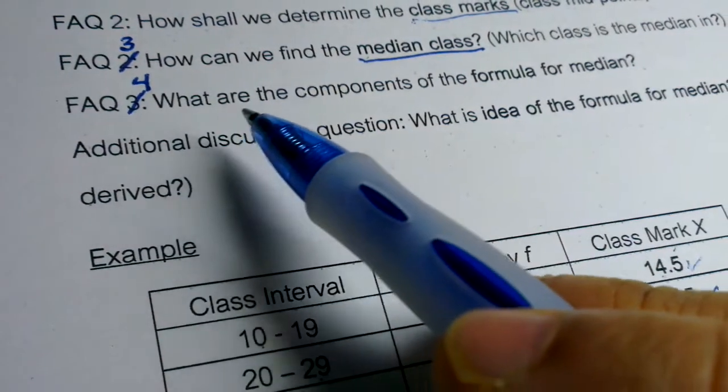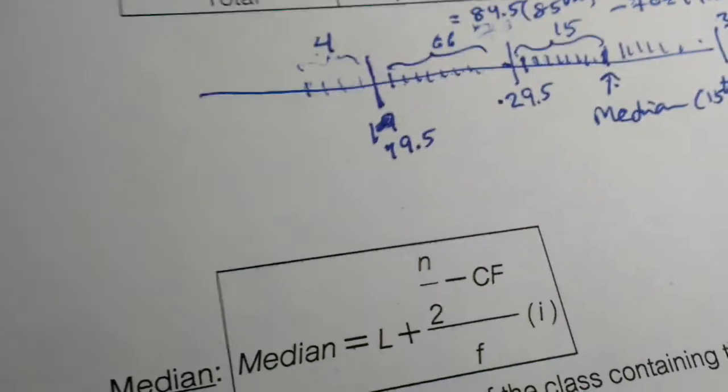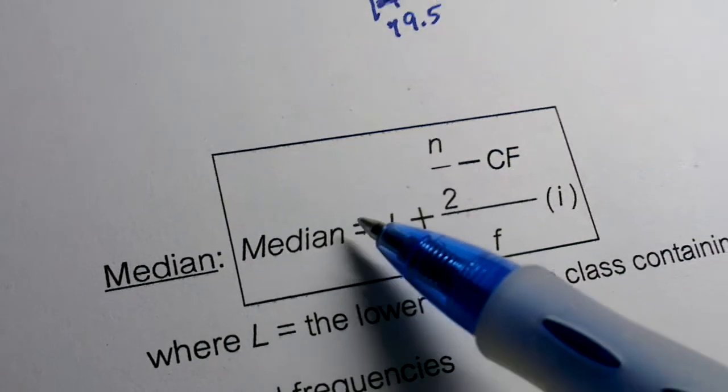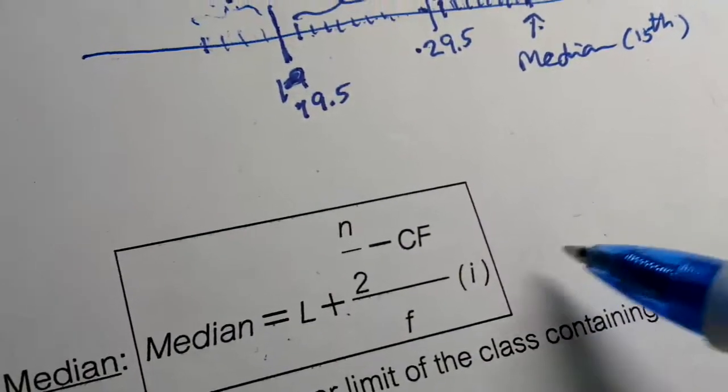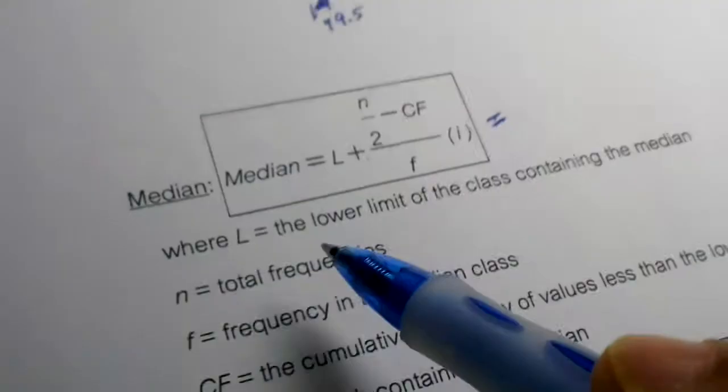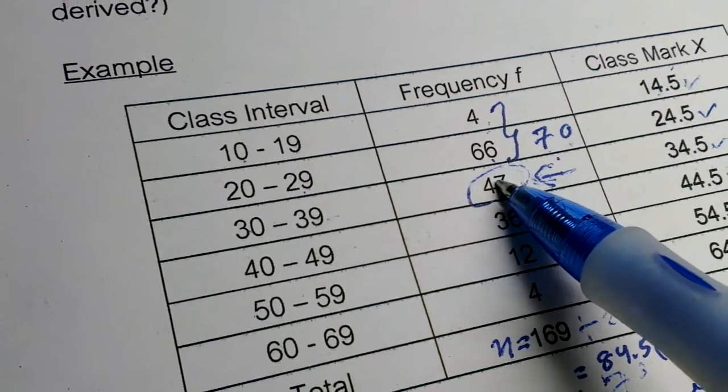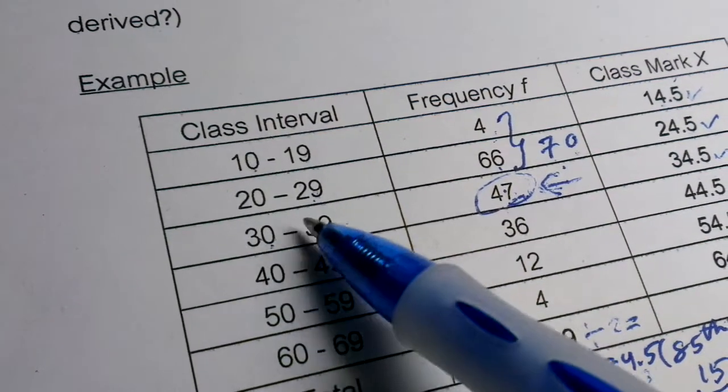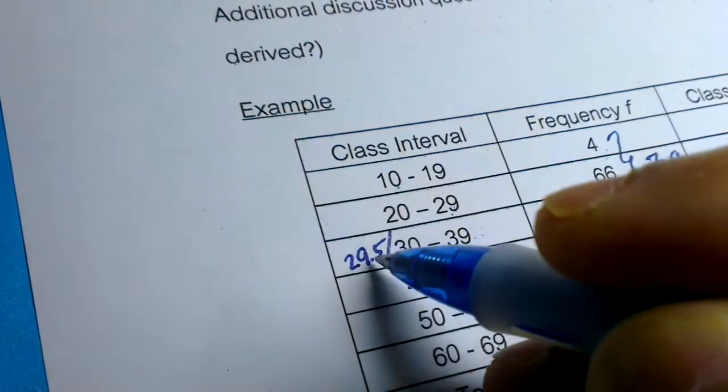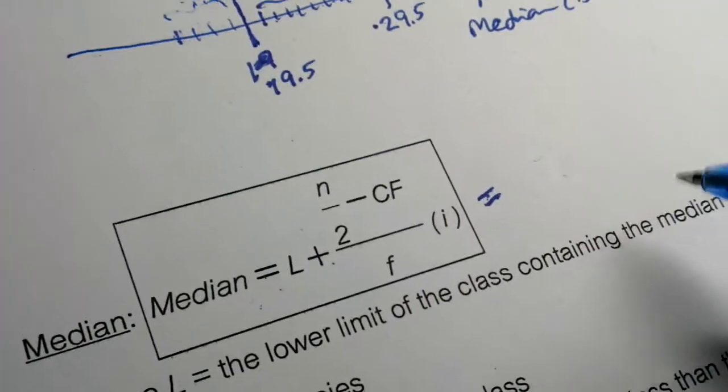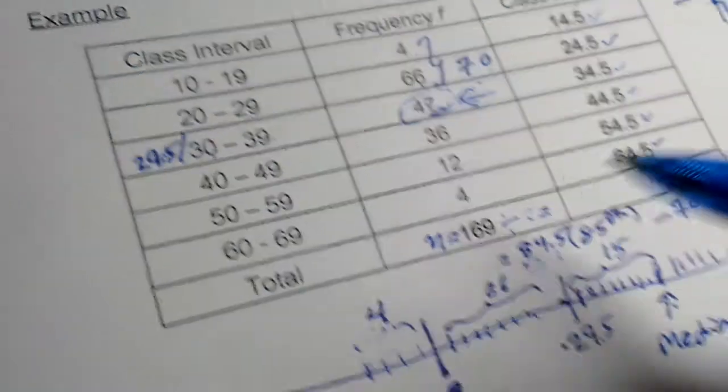Question 4. What are the components of the formula for median? Suppose you remember this formula. Median, how we calculate median in grouped data. Median L. Lower limit containing median. So we see lower limit of this class is 29.5. So L is 29.5. N is 169.